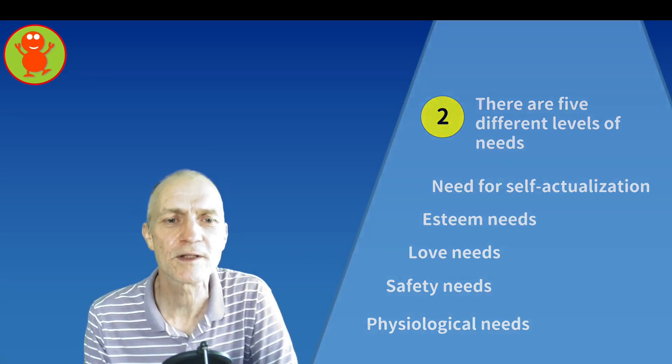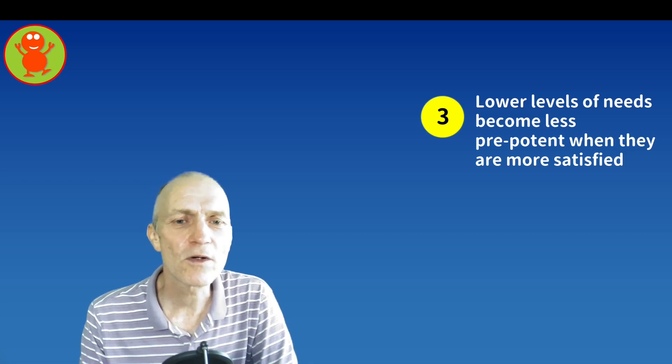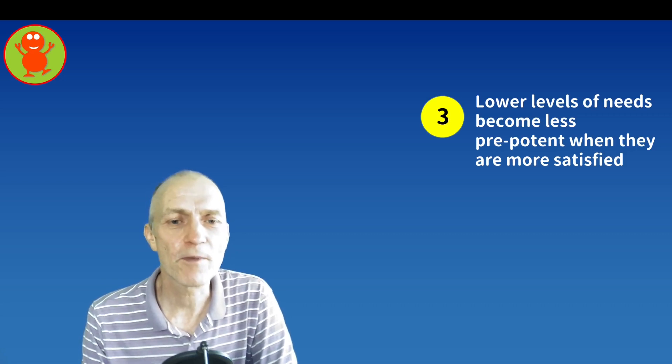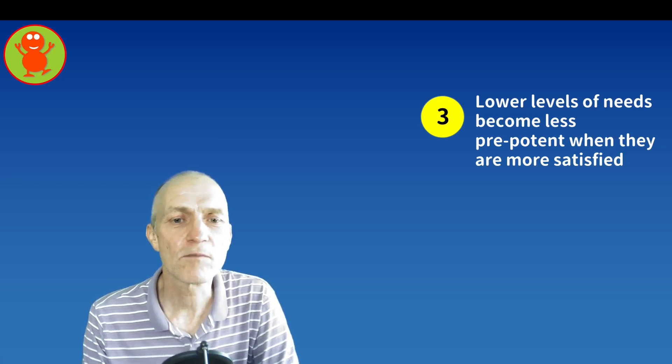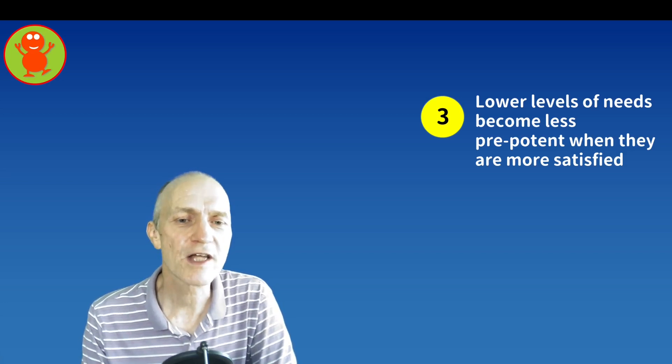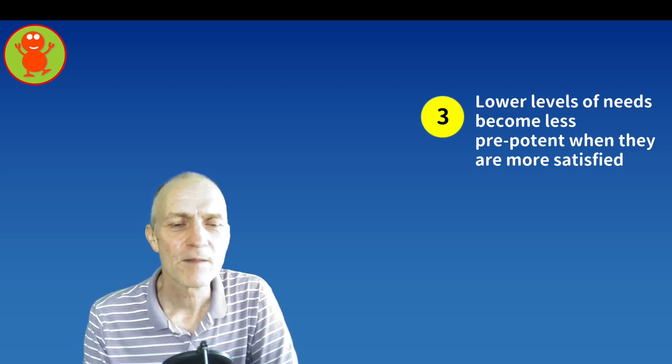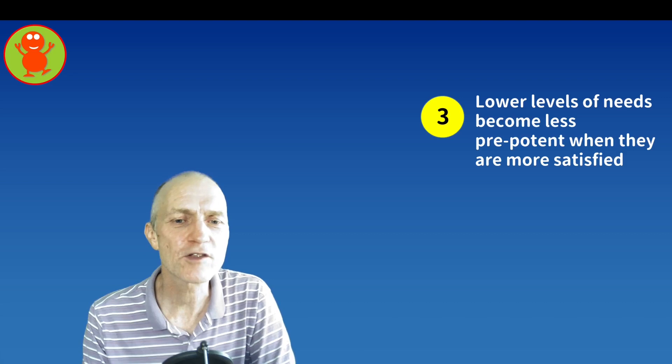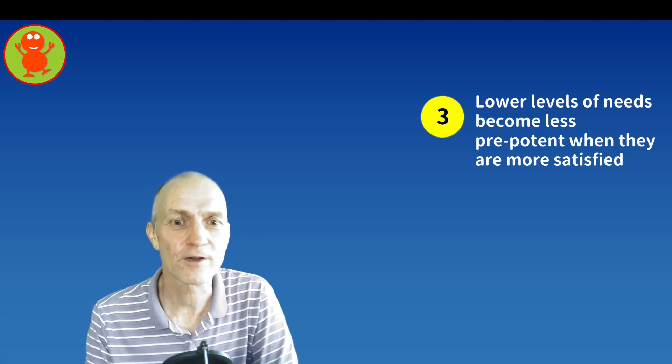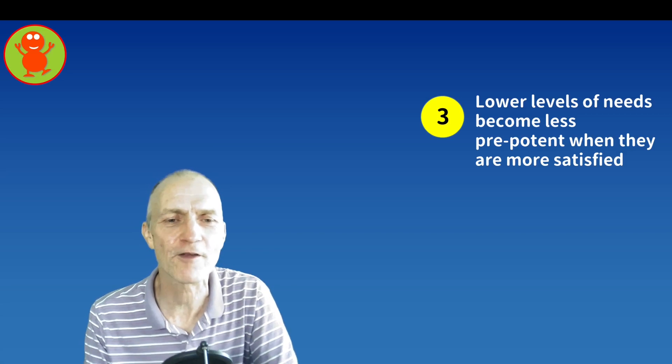So those are the five needs. Now the third key point is that lower levels of needs become less prepotent or dominant when they are more satisfied. For example, when you're super hungry, you can't think of anything else, that's the only thing that you have on your mind. But once you've eaten and you don't feel hungry anymore, you don't think so much about your physiological needs, assuming you're not thirsty and so on.